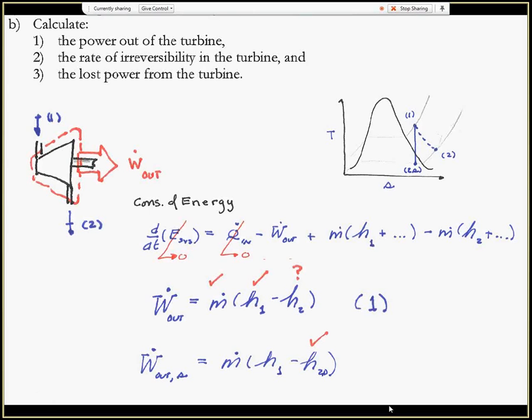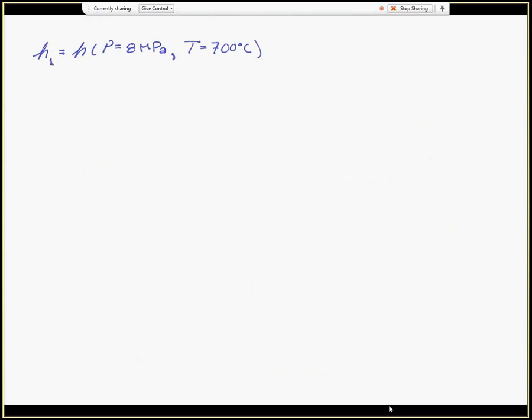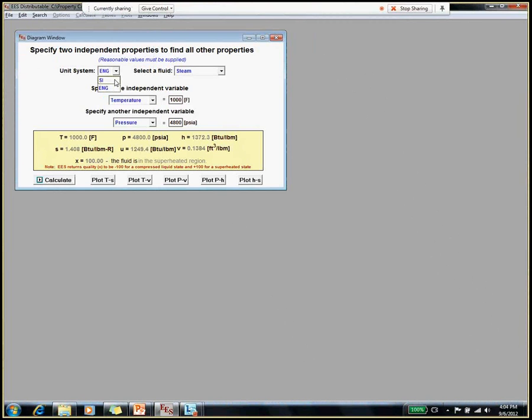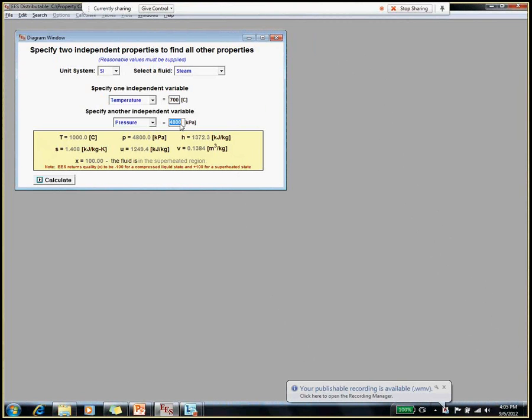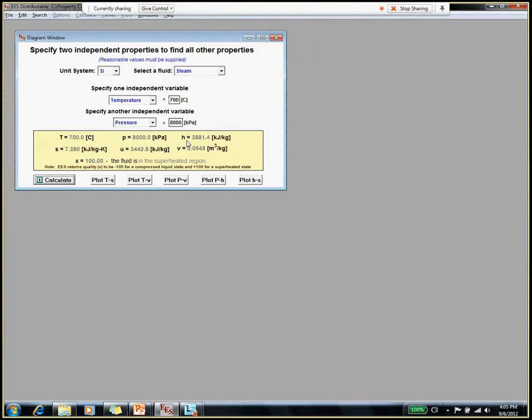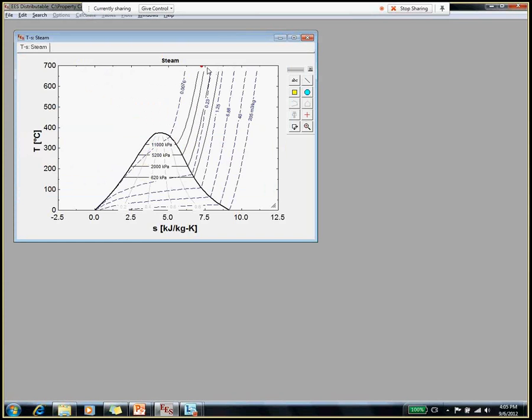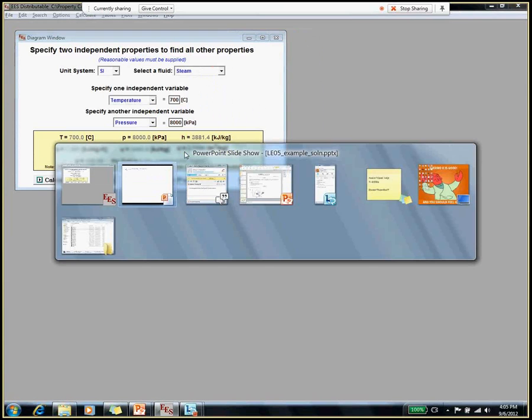So let's take a look at finding those properties for a change. So let's use our good old EES property finder to find these properties. So in this problem, we'll just take a minute to look at the use of those electronic steam tables. So at 1, we're given the pressure as 8 MPa and temperature as 700 degrees Celsius. Let's take a look at this. So let's get into the SI system here. My stuff is steam. We'll make the temperature 700 degrees. We will make the pressure 8,000 kilopascals, which is the same as 8 MPa. And that gives us an enthalpy of 3881 and an entropy of 7.28. Let's plot the T-S diagram just to make sure that we are superheated. Yep. Look at that. Way up there. There's our state point at the inlet of the turbine. Definitely superheated. So those are my properties at state point 1.